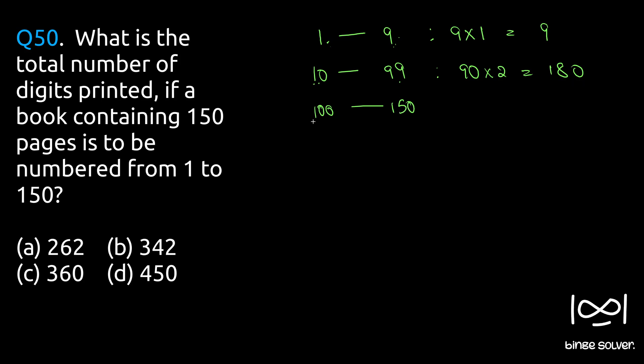Similarly, 150 minus 100 is 50, plus 1 equals 51 pages between 100 and 150 inclusive. Each page requires three digits, so 51 times 3 equals 153 digits.